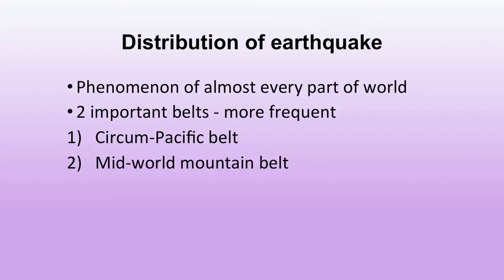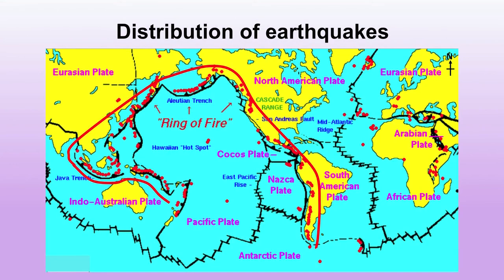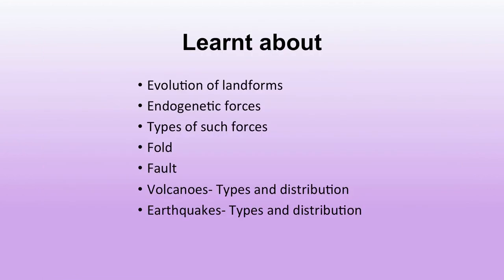Earthquake phenomena occur in almost every part of the world. Two important belts can be identified where it is most frequent: the circum-Pacific belt and the mid-world mountain ridge — similar to the occurrence of volcanoes, coinciding with volcanic eruption zones. In this session we learnt about evolution of landforms with the help of endogenetic forces, types of endogenetic forces — slow, sudden, vertical, horizontal — and fold, fault, volcanoes, and earthquakes. Thank you.